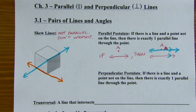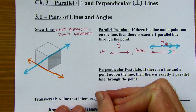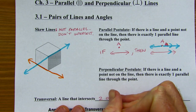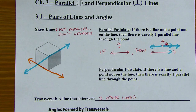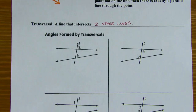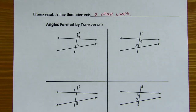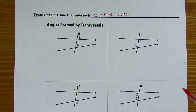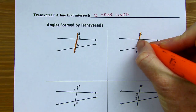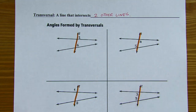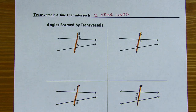A transversal is a line that intersects two other lines. It can also intersect three, four, or five lines, but at a minimum it has to intersect two other lines. So let's look at some angle pairs formed by transversals — this is kind of the heart of this chapter. The line labeled T in each picture stands for transversal, because it intersects the other two lines. In the picture, the one that's intersecting the two lines is usually what we call the transversal.